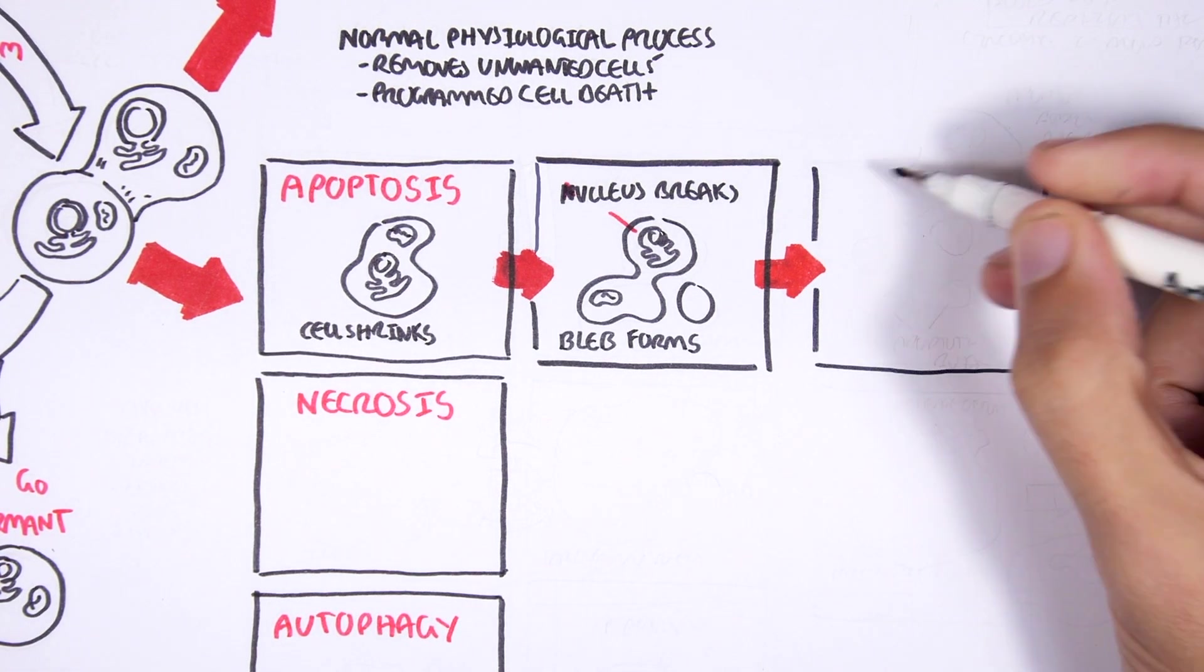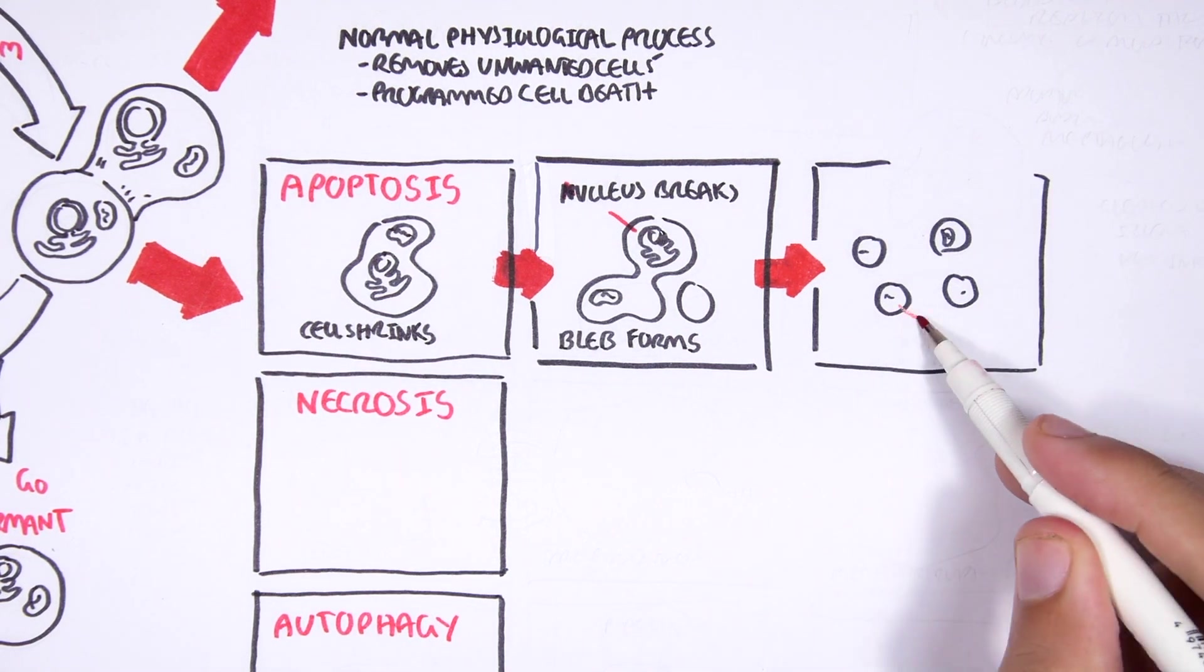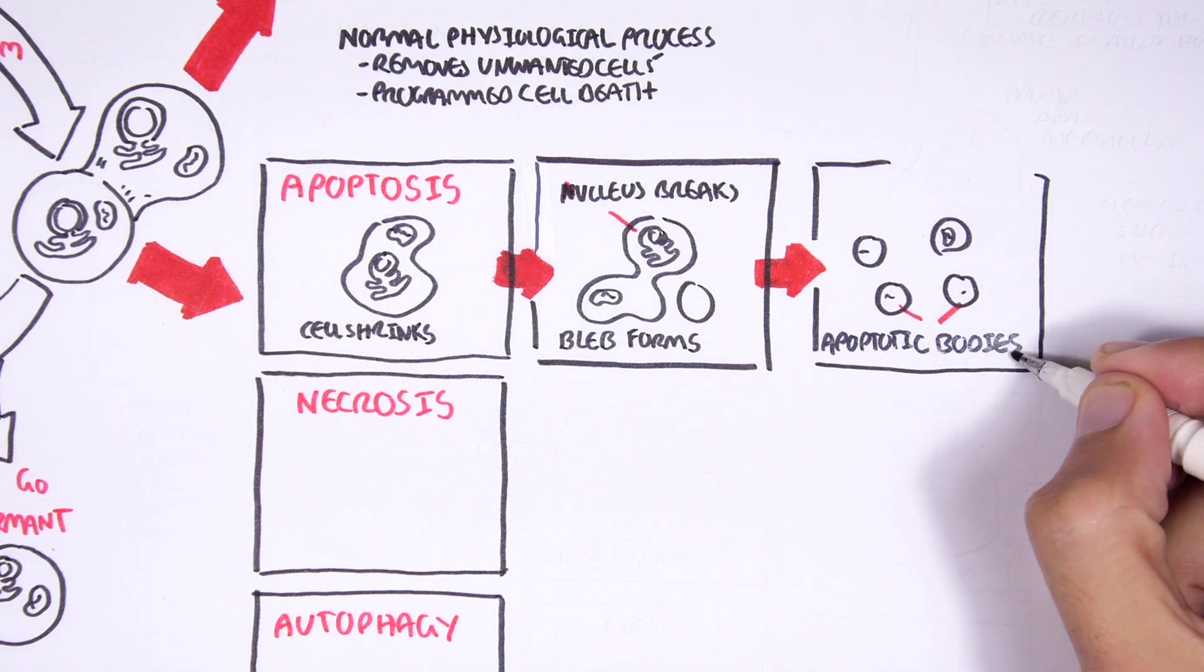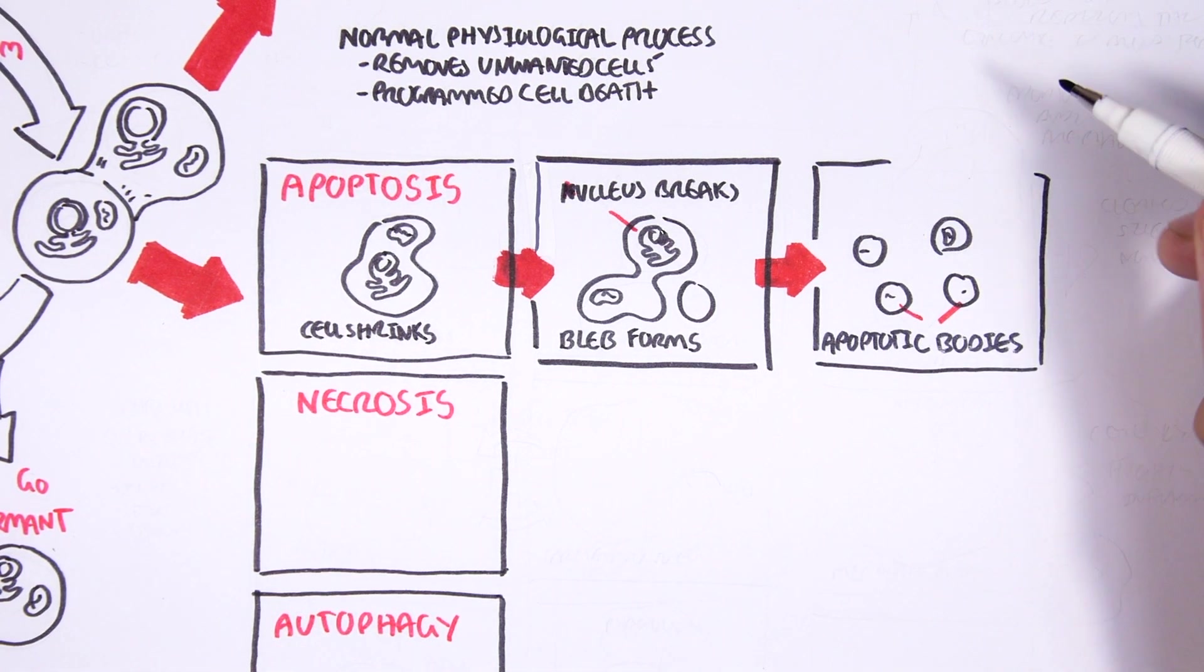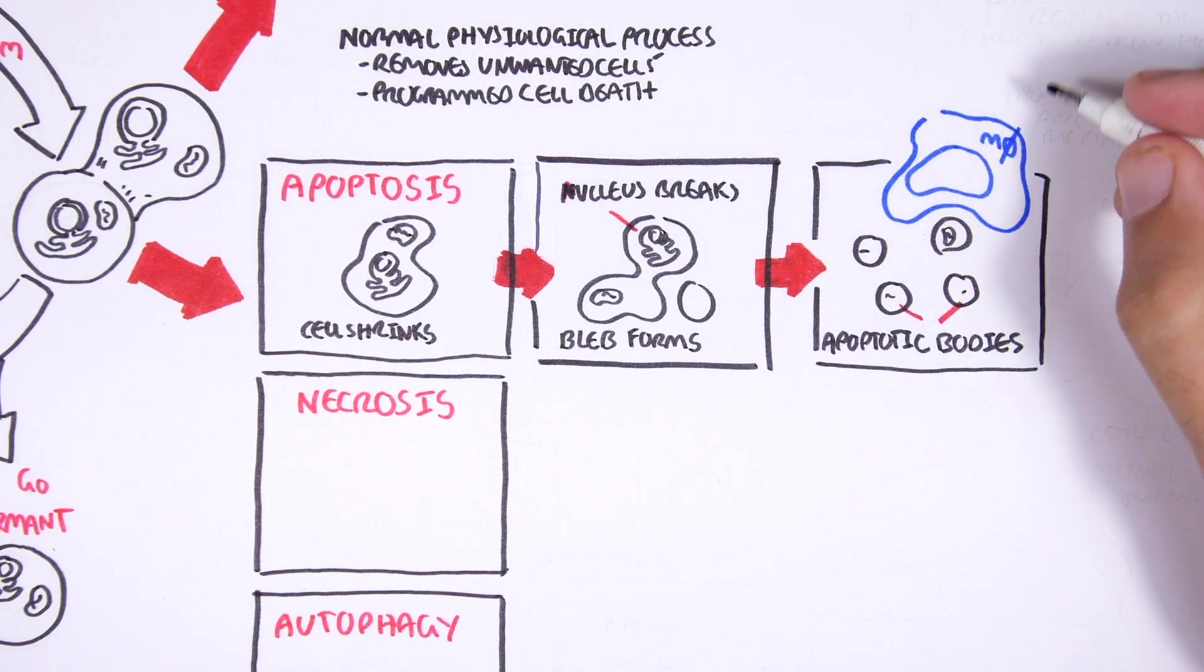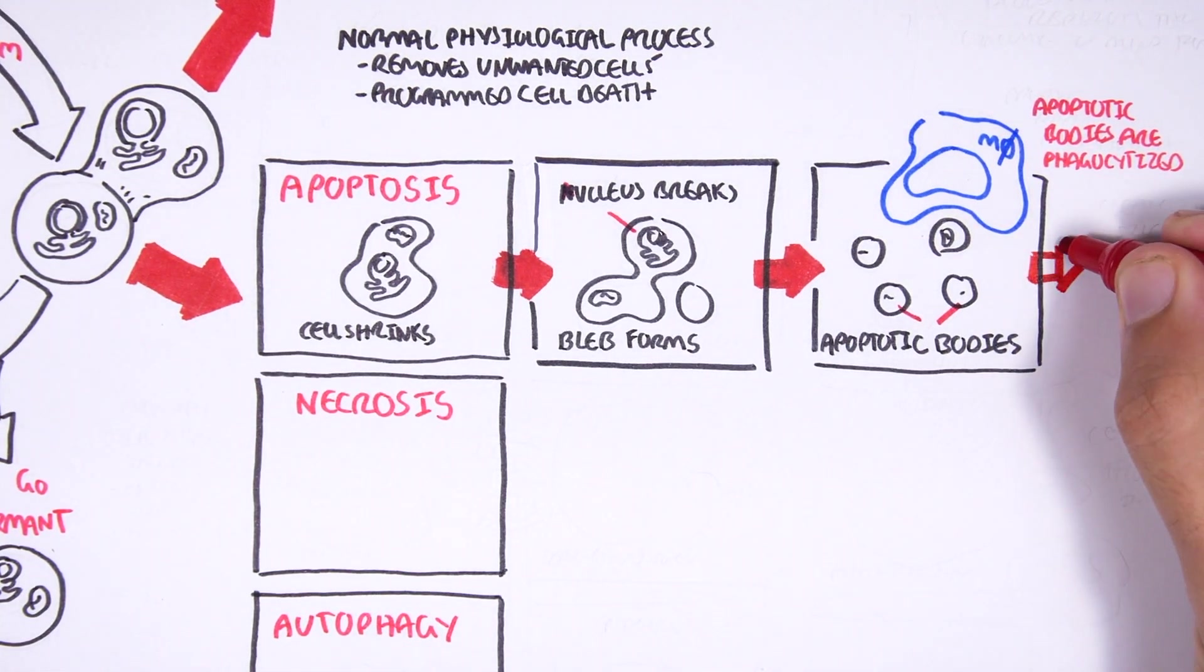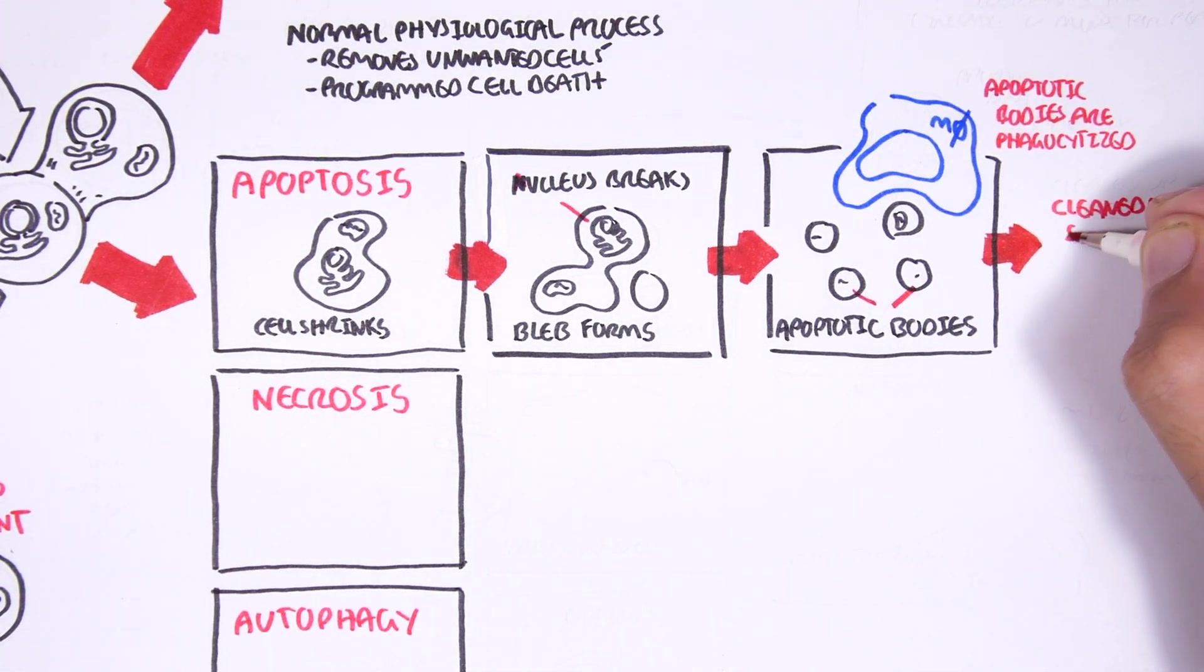And at the same time, the nucleus breaks, but the cell's integrity is still maintained. It doesn't go everywhere. As blebs are formed, it will form into apoptotic bodies. These apoptotic bodies will have the cell's organelles and parts within it, confined. Then macrophages will come along and clean up the apoptotic bodies. So the apoptotic bodies are phagocytosed. This leads to a silent, non-inflammatory cell death and everything is cleaned up.